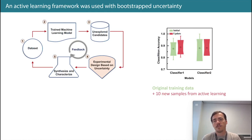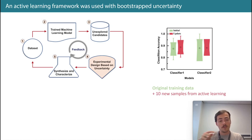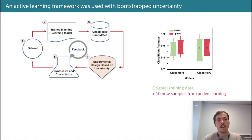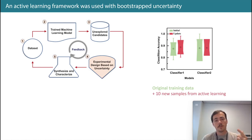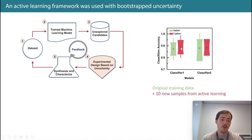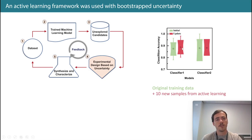They also did this in an active learning framework using bootstrapped uncertainty. Bootstrapping gives you a measure of uncertainty, and using that they could find regions of highest uncertainty to bias the next experiment toward exploring. You can see in the two classifier tasks that adding only 10 new samples selected from high-uncertainty regions substantially improved performance — a really cool application.